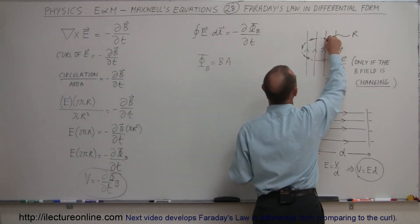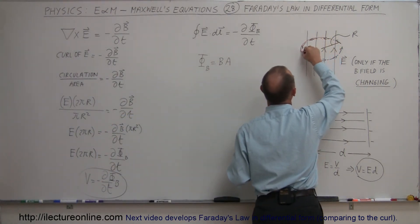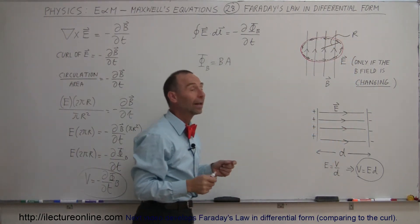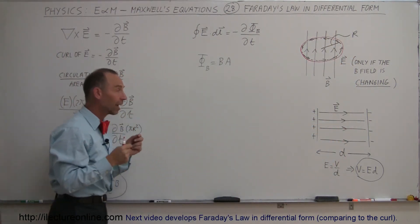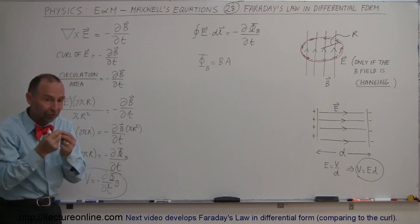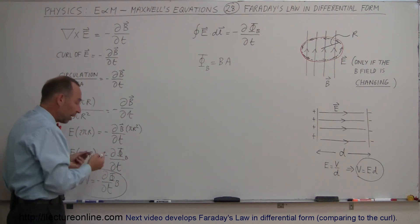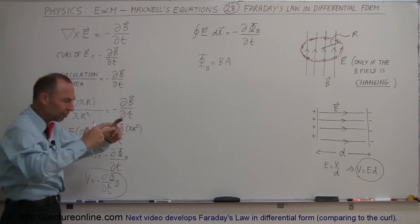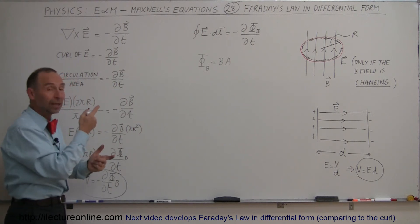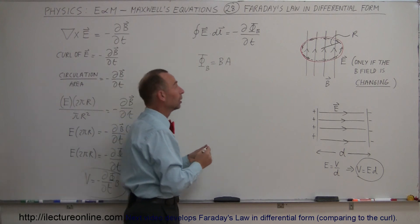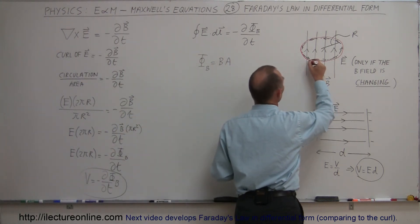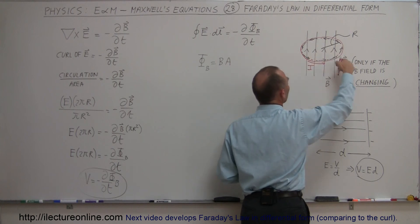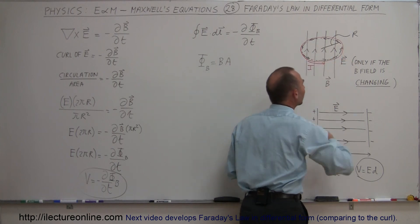What happens if we actually put a copper wire all the way around that B field? That copper wire will feel the electric field, which will set up a potential difference within the wire — not caused by any batteries, but as if there is a battery there — which will then push charge through the wire. So you would have a current flowing around the wire as long as the B field is changing.